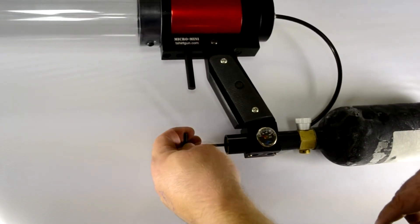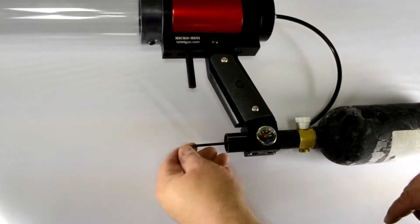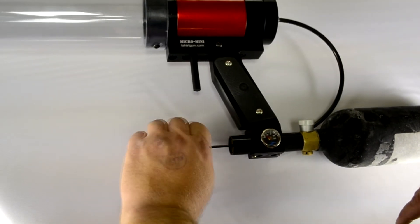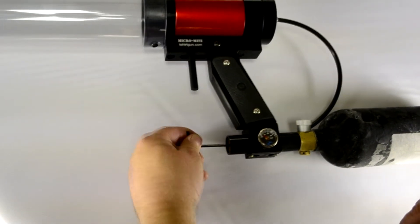Then using the provided allen key, we're going to turn the screw clockwise ever so slightly until we see the needle jump and hear gas fill the gun.